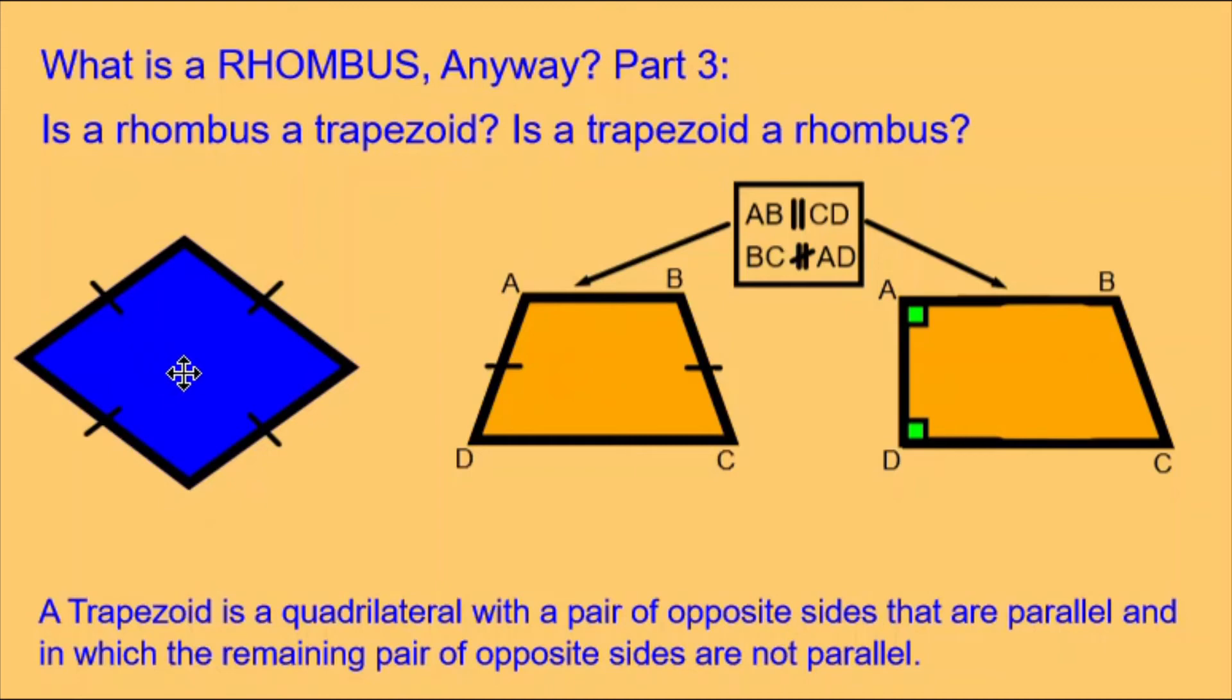Is the rhombus also a trapezoid? No. Why not? Because although it has a pair of opposite sides that are parallel, both pairs of opposite sides are parallel. It does not have a pair of opposite sides that are not parallel, so that means a rhombus cannot be a trapezoid.